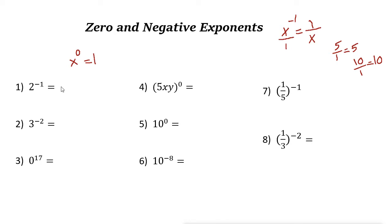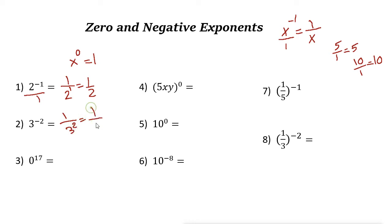Let's take a look at some examples. 2 to the power of negative 1: the power is negative, so we move it to the denominator to make the power positive, giving us 1 over 2. Next, 3 to the power of negative 2 is 1 over 3 squared, and 3 squared is 9, so the answer is 1 over 9.